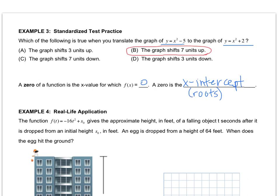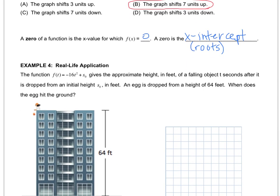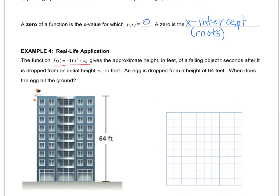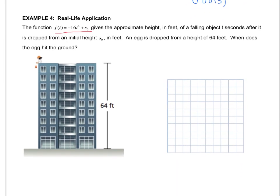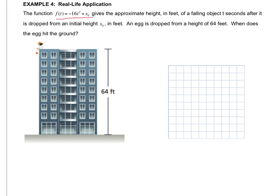All right, let's look at this real-life application of a parabola. This function right here gives the approximate height in feet of a falling object t seconds after it is dropped from an initial height. An egg is dropped from a height of 64 feet. When does the egg hit the ground?